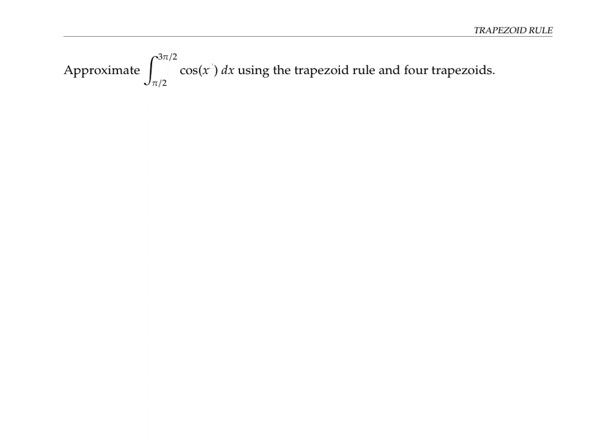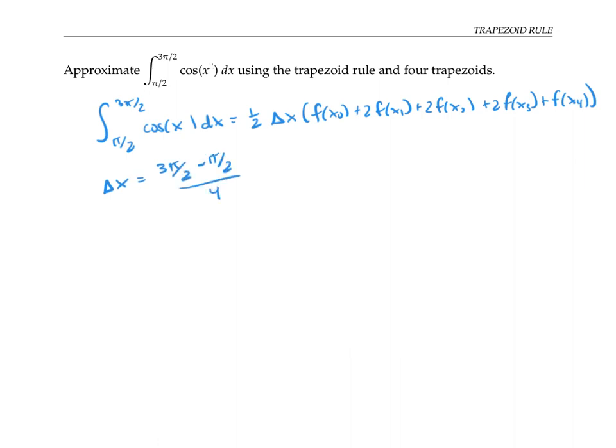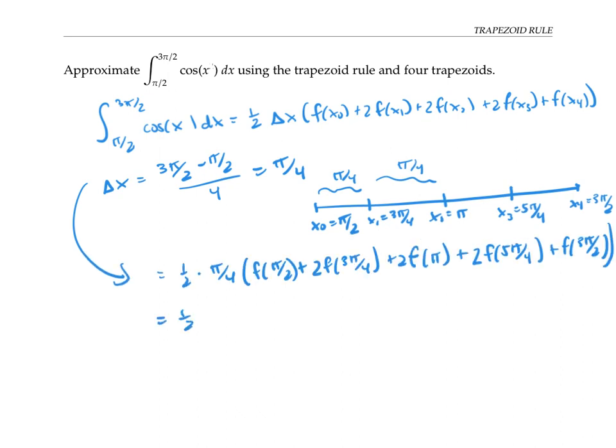Let's use the trapezoid rule to approximate the integral of cosine X between pi over 2 and 3 pi over 2 using 4 trapezoids. Since I want to use 4 trapezoids, I'm going to approximate my integral using this formula. Here delta X is going to be the width of my subinterval, which is pi over 4. And the X subs are going to be the endpoints of my subintervals. So I start with X0 is pi over 2, I end with X4 which is 3 pi over 2, and my other Xi's just go up pi over 4 each time.